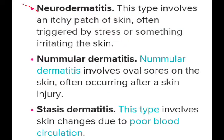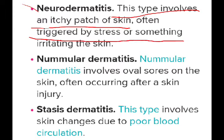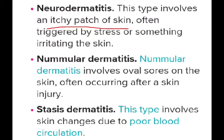The fifth type is neurodermatitis. This type involves itchy patches of skin triggered by stress or something irritative in the skin. The nerve endings within the skin get damaged or irritated, causing itching complaints. If stress acts on irritated skin, itching symptoms appear — stress is a key trigger point for neurodermatitis.